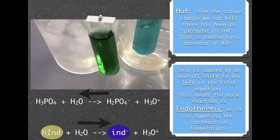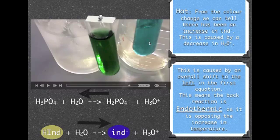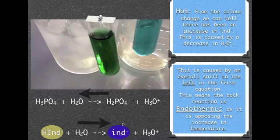Now I'll read it through and explain it. In the hot water, the color change we can tell that there's been an increase in this indicator negative which is a blue color. This is caused by the decrease in hydronium because Le Chatelier says we want to re-establish equilibrium by re-increasing this so therefore we have a forward reaction here happening.